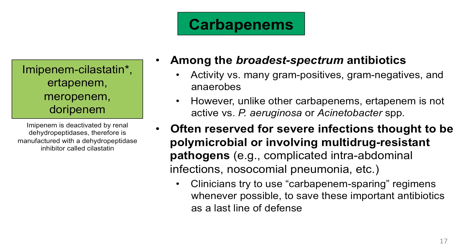We will briefly discuss the carbapenem subclass of beta-lactams. The four common carbapenems are listed in the green box. Note that imipenem is administered with a drug called cilastatin, which inhibits renal dehydropeptidases and prevents deactivation of imipenem. These are among the broadest spectrum antibiotics available, with activity against many gram-positive pathogens, gram-negative pathogens, and anaerobes. However, ertapenem has a slightly less broad spectrum of activity, not covering Pseudomonas or Acinetobacter species.